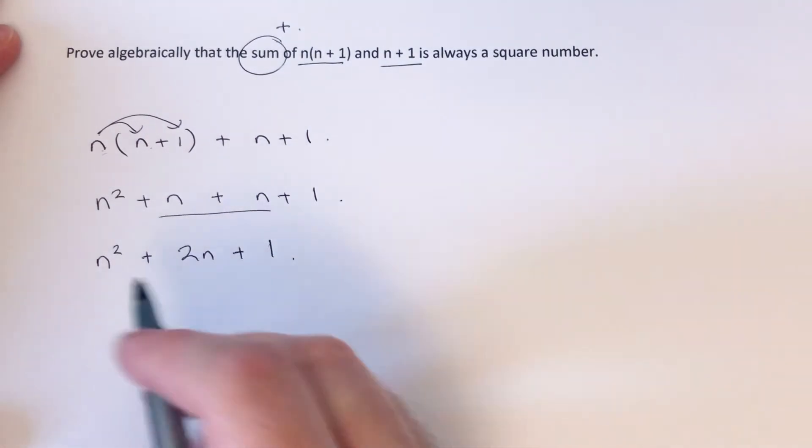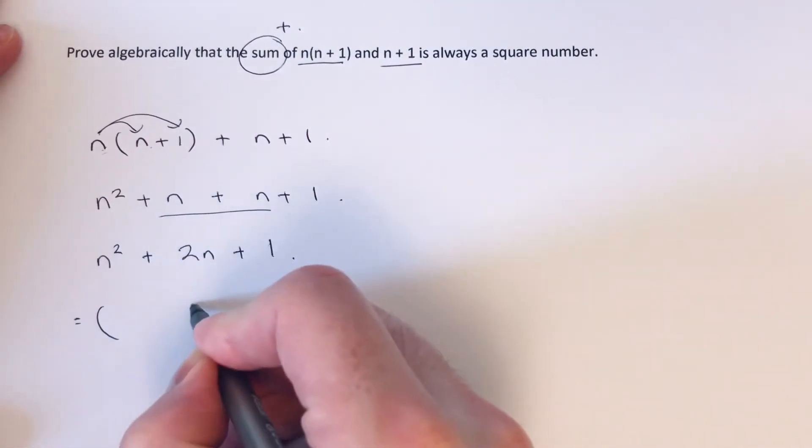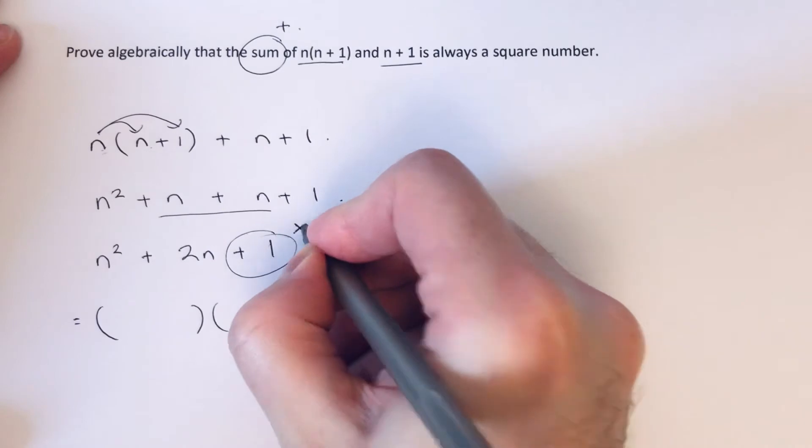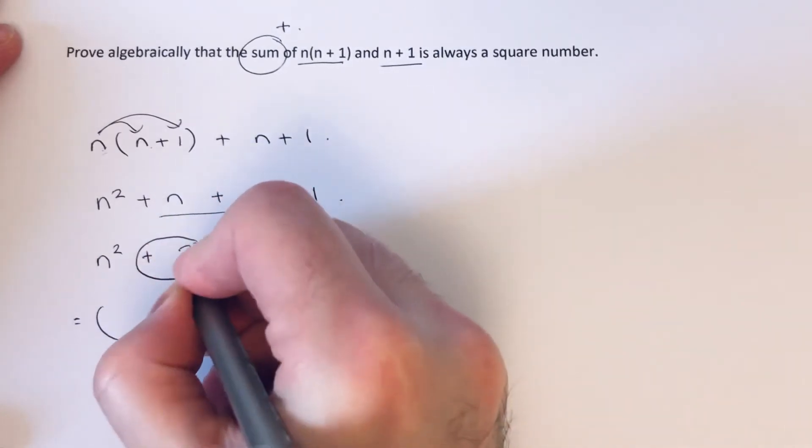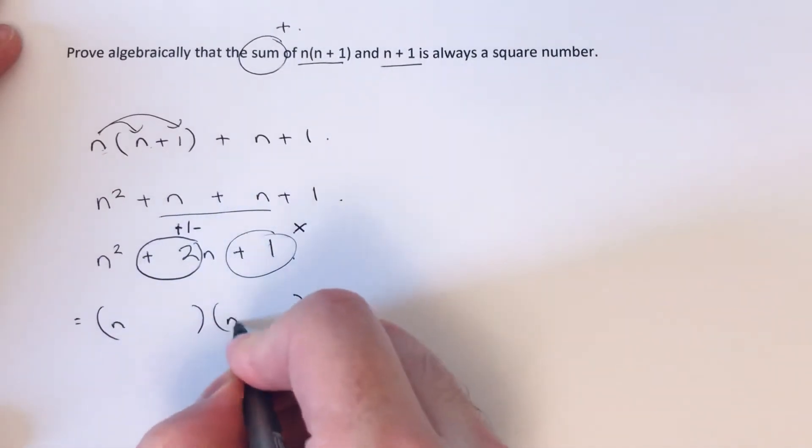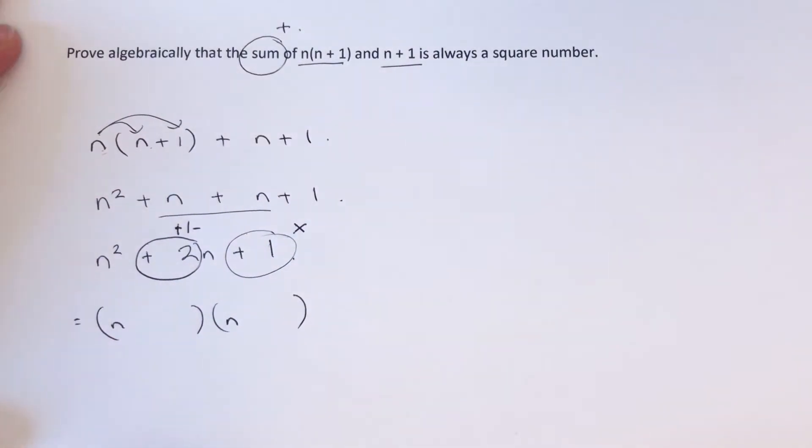So our last number is plus 1 and our middle number is 2. We need two numbers which multiply to give us plus 1 and two numbers which add to give us 2. So the two numbers could be minus 1 times minus 1, or plus 1 times plus 1.